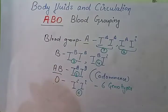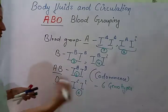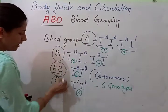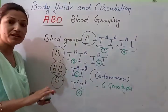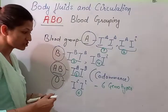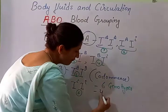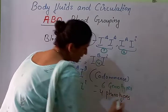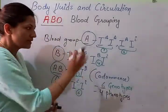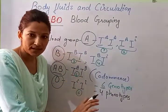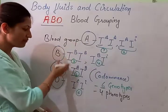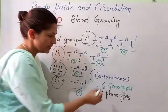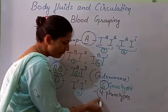And what are the phenotypes? Those are the physical characters which appear. So blood group A, blood group B, AB, and O — how many blood groups have we got as a result of these combinations? We have got 4 types, so there are 4 phenotypes and 6 genotypes. Six genotypes means 6 combinations to get 4 different types of blood group.